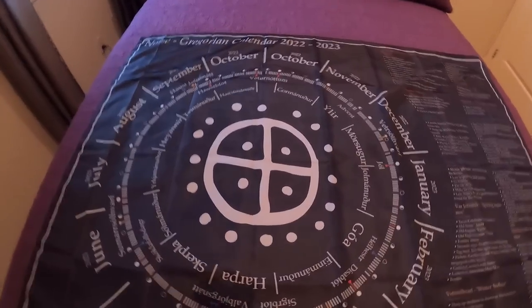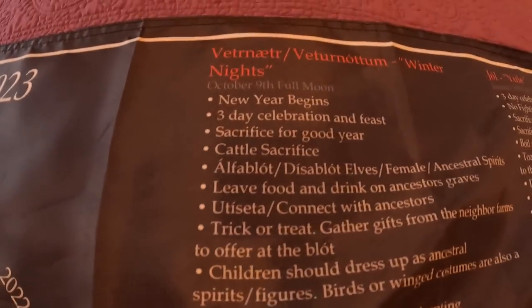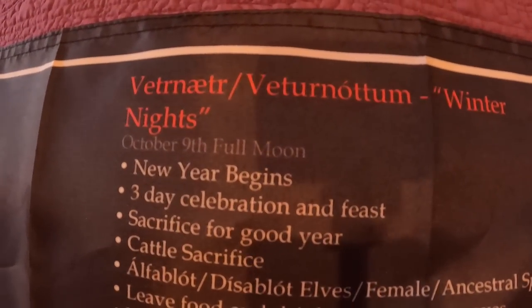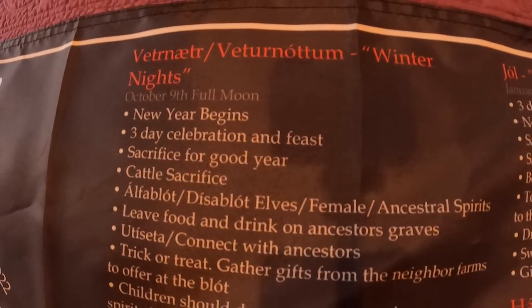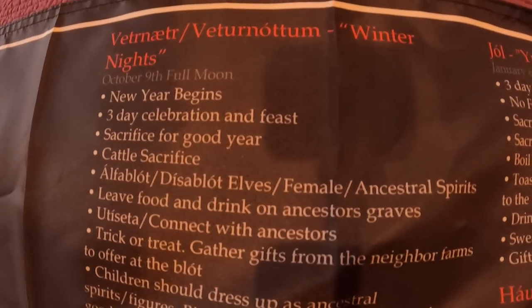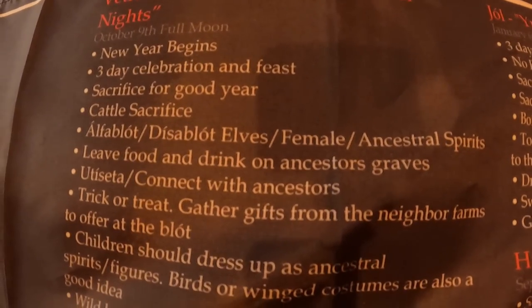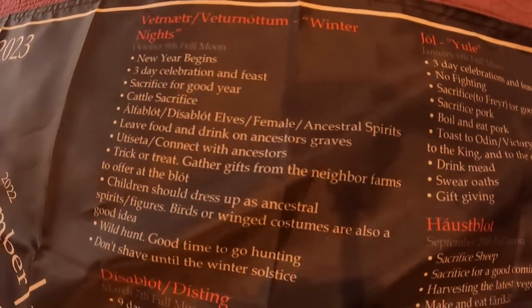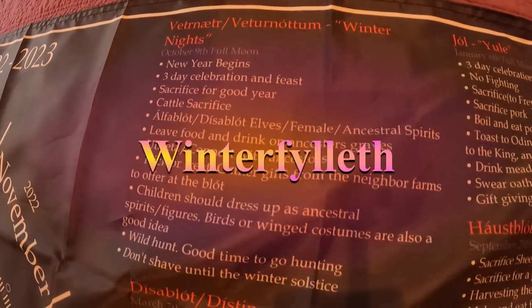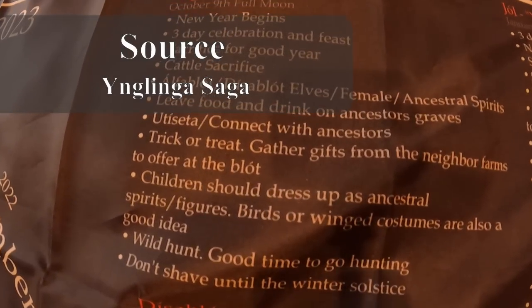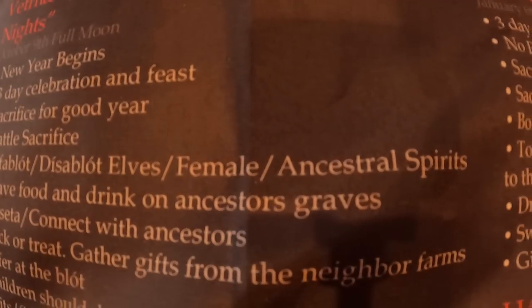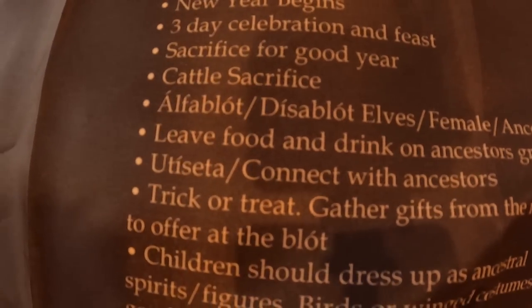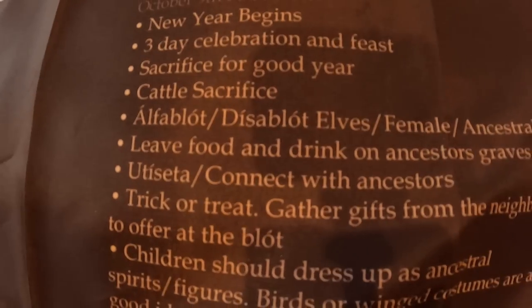On to the holidays. At the start of the year in the Norse religion, this is Vetrnættir — or Vetrnættum — Winter Nights. This is October 9th, the full moon coming up in just a few weeks. This is when the new year begins, when winter begins. It's a three-day celebration and feast, and this is by far the most attested holiday in all the Norse sagas. It's also mentioned in Bede's account of the Anglo-Saxons, who called this month Winterfelleth. It's a sacrifice for a good year according to Heimskringla and Ynglingasaga — a cattle sacrifice. It could be the Álfablót or Dísablót: sacrifices to the elves and the female ancestral spirits.